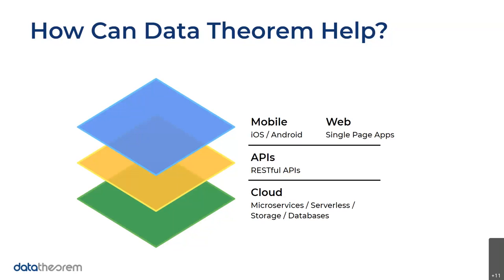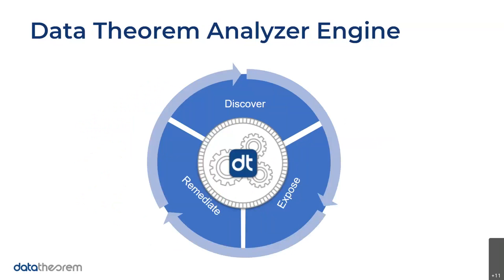With our API Secure product, we have an analyzer engine with three different stages running continuously: discovery, exposure, and remediation. During the discovery phase, this product begins with an inventory of all your existing APIs — whether public API domains, SPAs, or cloud assets. We'll even check private APIs and identify existing cloud building blocks like queues, containers, and cloud storage. We can then identify any potential vulnerabilities or shadow assets you're unaware of that could be vulnerable to attacks or data leaks.